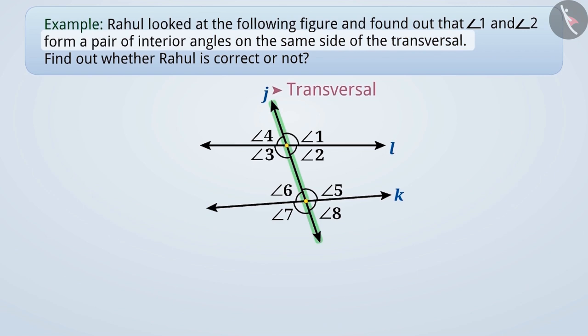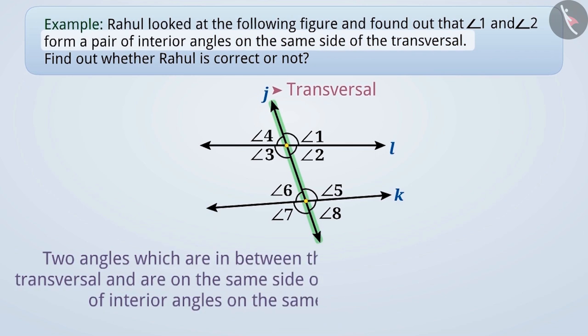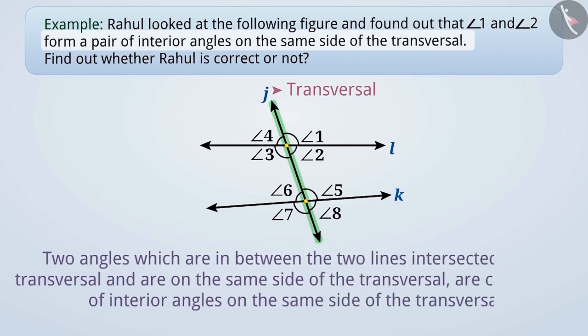We already know that the two angles which are in between the two lines intersected by the transversal and are on the same side of the transversal are called a pair of interior angles on the same side of the transversal.